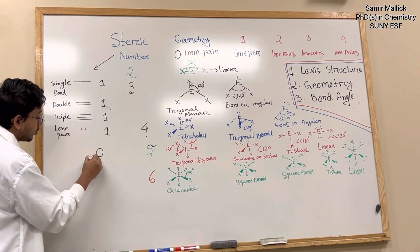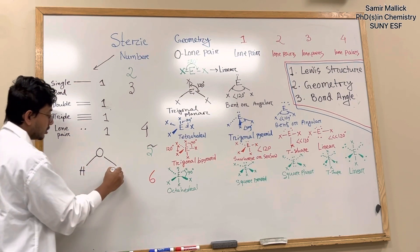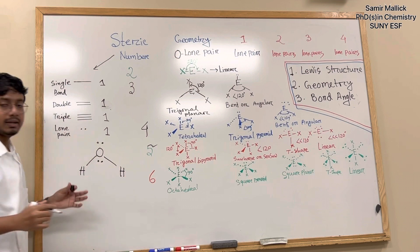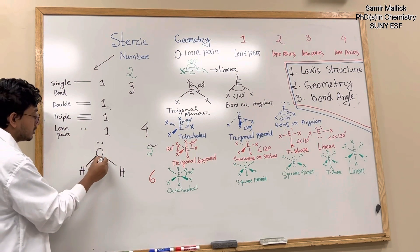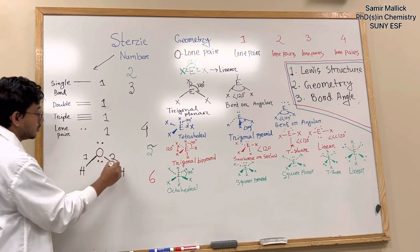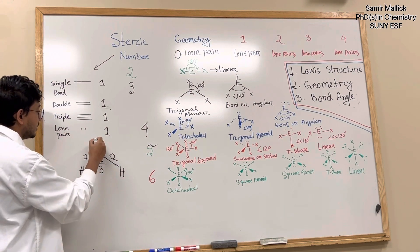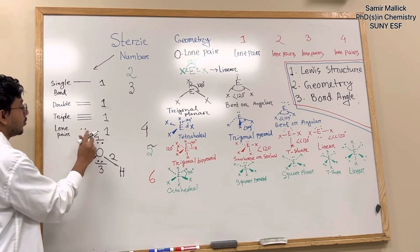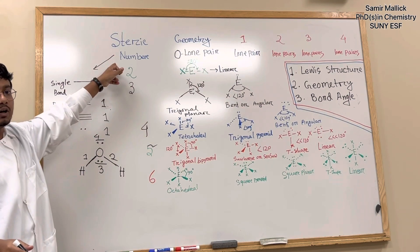To determine the steric number, I can give you an example. We already know the structure of a water molecule. In the water molecule, there are two single bonds — one, two — and two lone pairs — one, two, three, four. So this total of four is counted as the steric number.